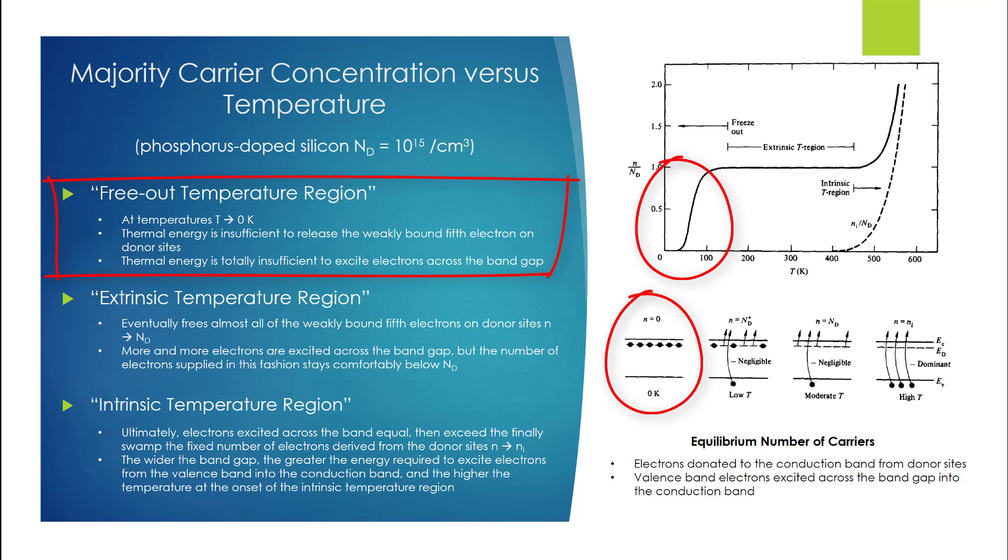At temperatures T approaching absolute 0K, the thermal energy available in the system is insufficient to release the weakly bound fifth electron on donor sites and totally insufficient to excite electrons across the band gap.